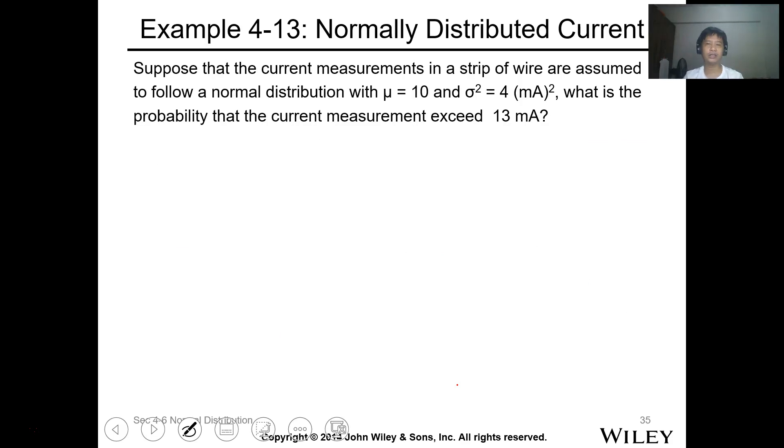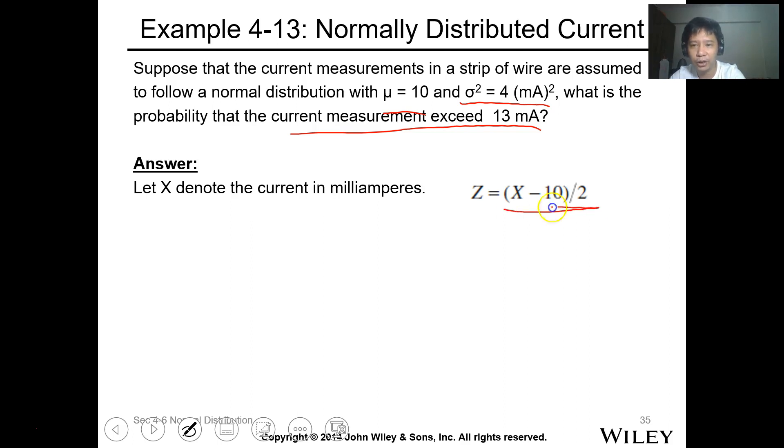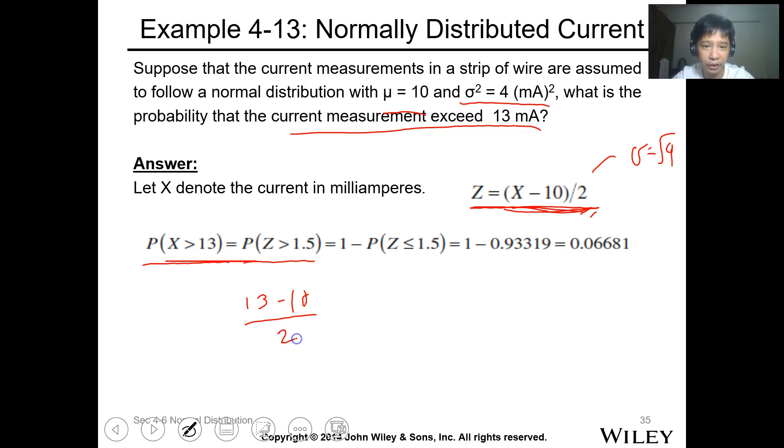So let's have this one. Suppose that the current measurement in a strip of wire are assumed to follow a normal distribution with mu equals 10 and a sigma squared or a variance of 4 milliampere squared. What is the probability that the current measurement exceed 13 mA? So let x denote the current in milliampere. We want to get your z value where the formula for the transformation is x minus 10 over 2, where 2 is your sigma, square root of 4. So probability of x greater than 13 to z. So 13 minus 10 divide by 2 will equal to 1.5. So z is greater than 1.5.